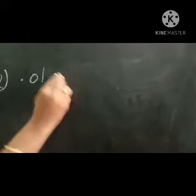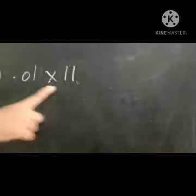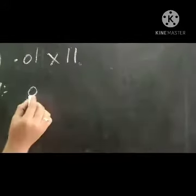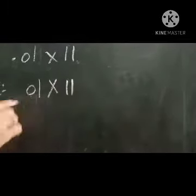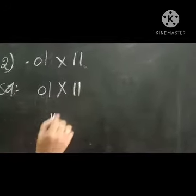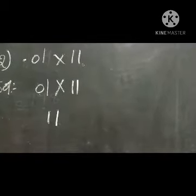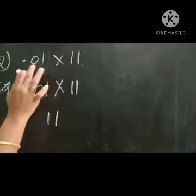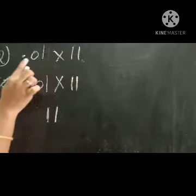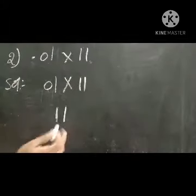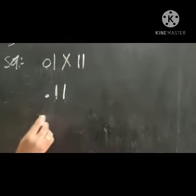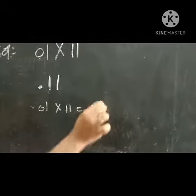Next example: 0.01 into 11. First, we remove the point. Just 1 into 11 — 1 eleven is 11. How many numbers are there after the point? Two numbers. After the point we have to write two numbers, so in front of the two numbers we have to keep the point. So 0.01 into 11 equals to 0.11.